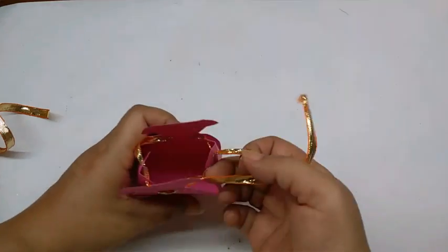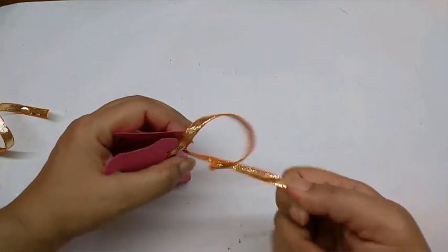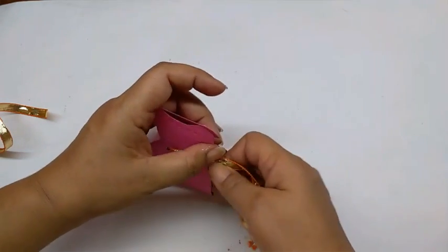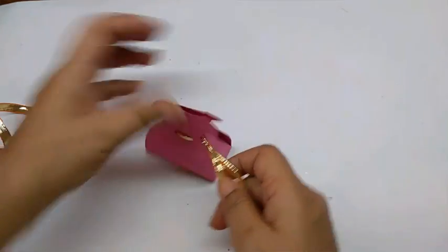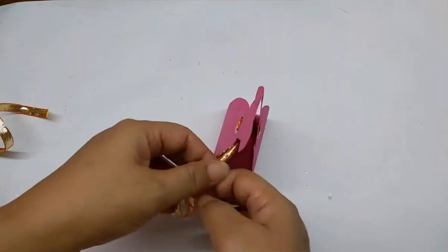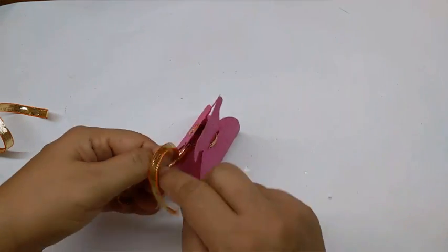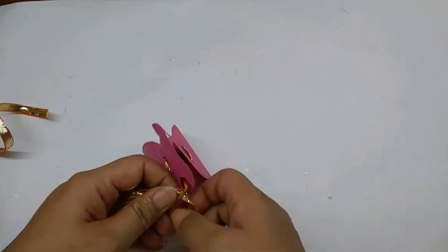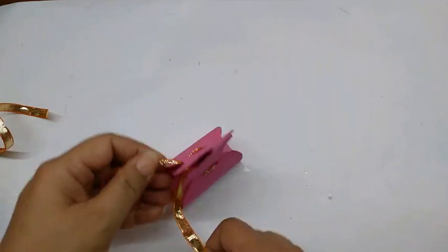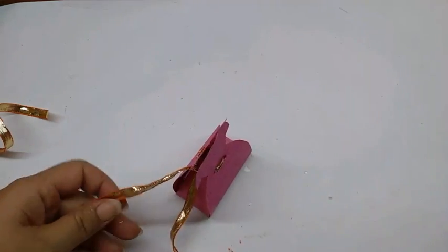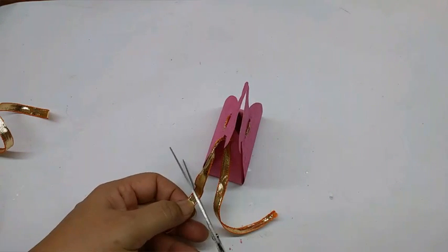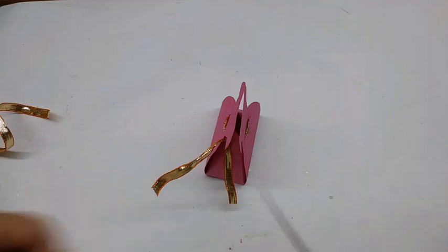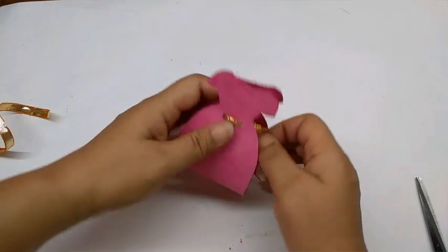Now just pull it tight to close the box and tie a knot here. Since the lower dress of the Indian bride has the string hanging on the side, I am just going to hang it here on the side and cut it according to the length. This is how it will come out.